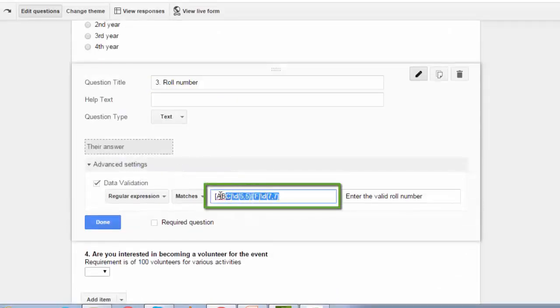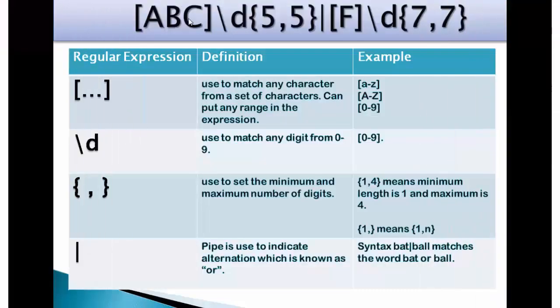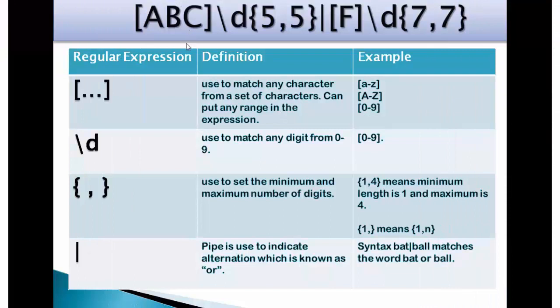This is the expression. Let me now explain each part in detail. A, B, C, this implies these three characters. Backslash D is used to match any digit from 0 to 9. Then this brace 5,5 means a digit can be minimum 5 and max 5 characters. I have already discussed this. Brace close and there is a pipe in between which is used to indicate alteration which is also known as OR. We normally use it as bat, pipe, ball which matches both words bat or ball.